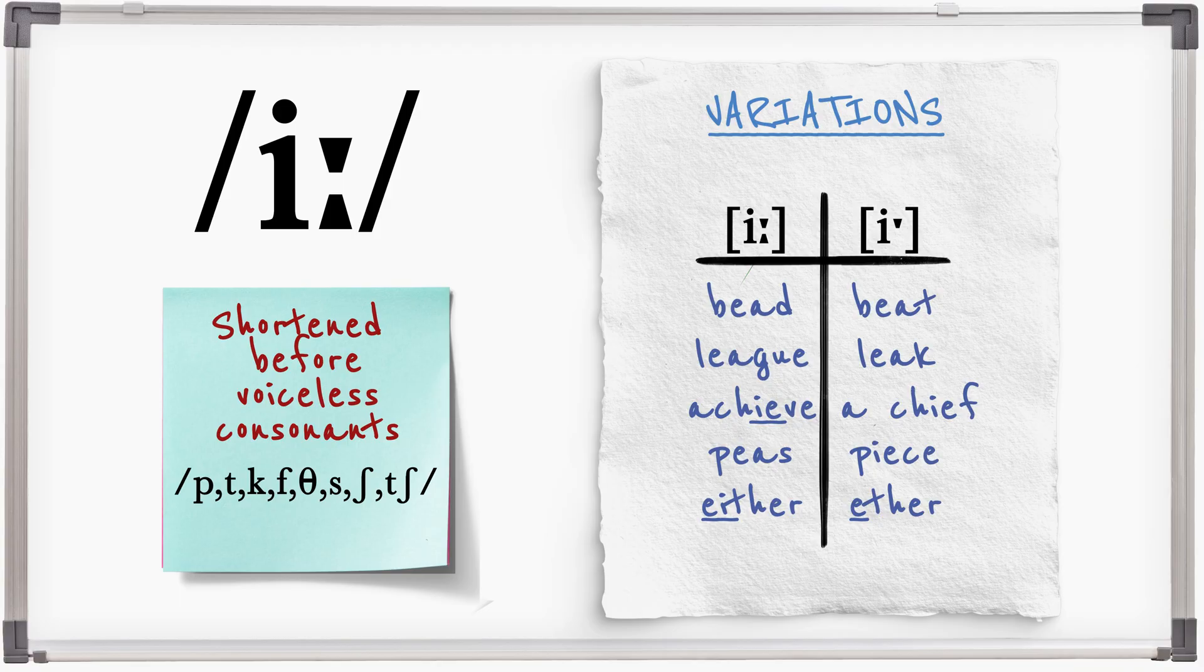You can hear that the first group of words was significantly longer. This process is known as pre-fortis clipping.